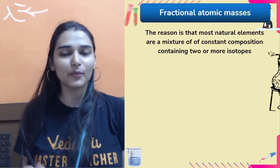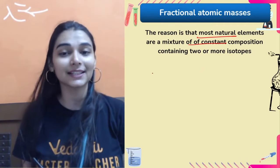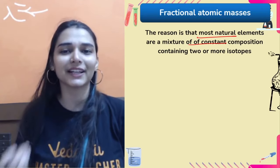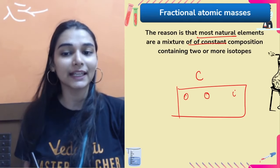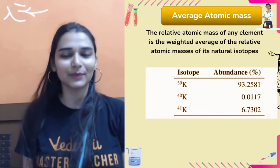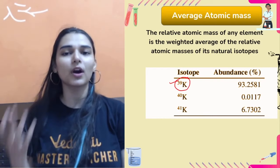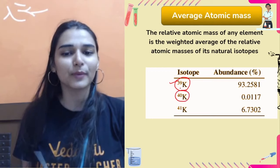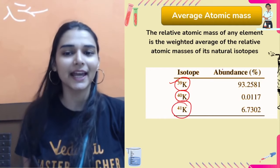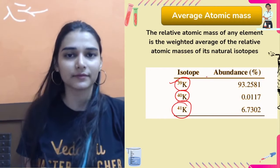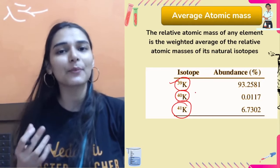Then we have fractional atomic masses. Some elements exist in more than one form — isotopes. For example, carbon or potassium. Some potassium atoms have a mass of 39 units, some 40, and some 41. Since atoms of the same element must use the same mass, we need to reach a conclusion about which mass to use for potassium.